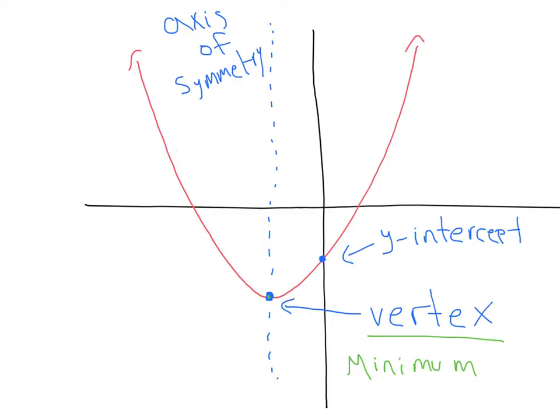Also, since it's a positive x squared term, this is a minimum, the very lowest point. We have the y-intercept, where the parabola crosses the y-axis. And the line that extends vertically through the vertex, that serves as a mirror for each side of the parabola. That's known as the axis of symmetry.